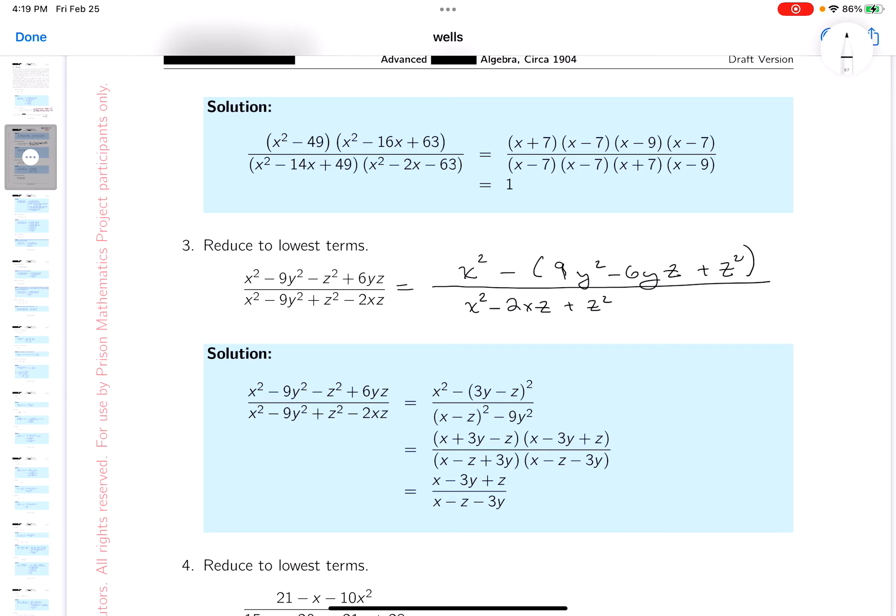So I rearrange because I see maybe I can deal with that, and then I see the minus 9y squared. Well, I'm going to factor the top, at least partially.